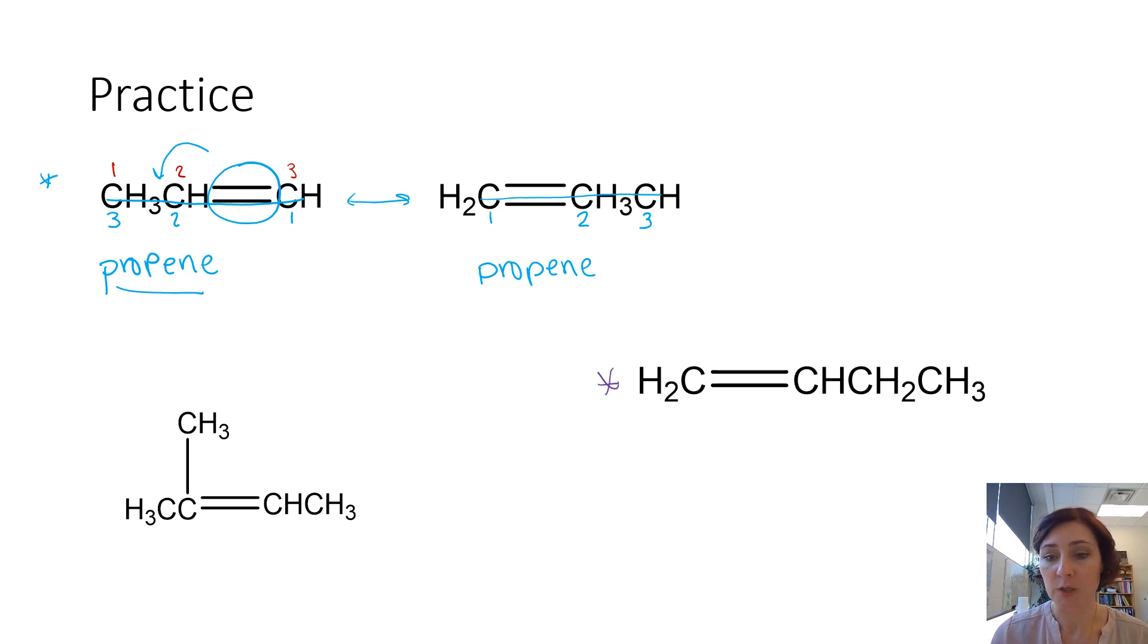In our next example, we're going to draw a line through our longest continuous chain of carbons that contains a double bond. Done. Now I need to worry about numbering my chains so that the double bond gets the lowest number possible. Well, obviously, I'm going to start here. One, two, three, four. So four carbons is the prefix but, and because there's a double bond present, we end the name in E-N-E. Now, this double bond could be between carbons one and two, but it could also be between two and three.